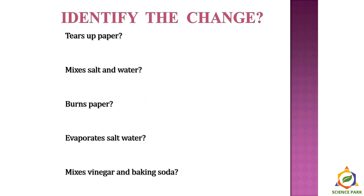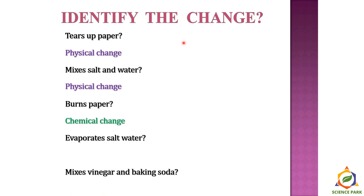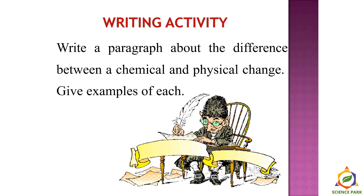Pause the video again and write down all the following: tearing paper, mixing salt and water, burning a paper, evaporating salt water, and mixing vinegar and baking soda. For each, write whether it is a physical change or a chemical change. Tearing paper is a physical change. Mixing salt and water is a physical change. Burning a paper is a chemical change. Evaporating salt water is a physical change. Mixing vinegar and baking soda is always a chemical change. Now write a paragraph about the difference between chemical change and physical change with examples.